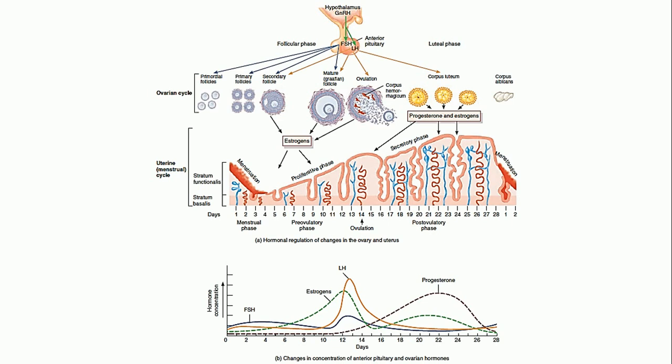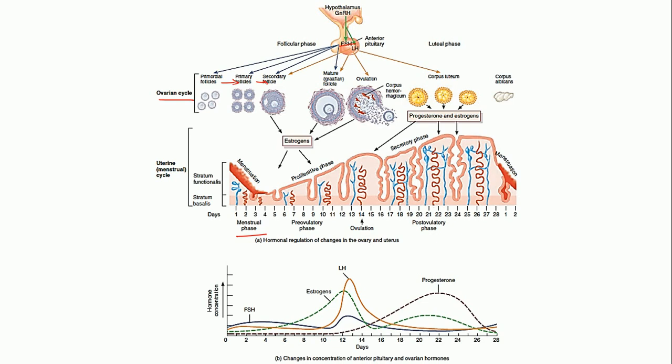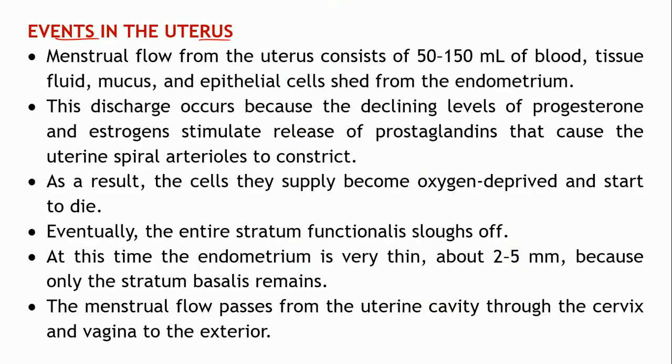With respect to the menstrual phase, the events in the ovary show follicles developing from primordial to primary to secondary under the influence of FSH due to increased FSH levels. Coming to the events in the uterus during the menstrual phase: the stratum functionalis is getting shed off because of a decrease in the levels of progesterone and estrogen at the end of the previous cycle, and so here begins the new cycle.